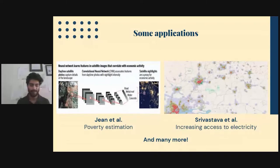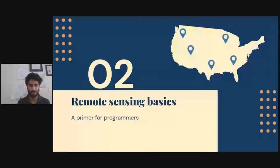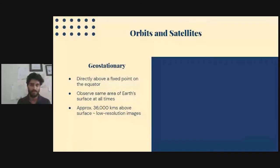To give you a small primer about what the terminologies are and what remote sensing is all about, this field has usually been shrouded in esoteric terminology and some things that computer scientists should not really care about. I'll just give you the bare fundamentals of what you need to know to get started. Number one is a demarcation between what kinds of orbits and satellites there are. A geostationary satellite is directly fixed above a single point on the equator of the earth's surface. So it observes the same area of the earth's surface at all times. The physics behind this governs that these satellites should be around 36,000 kilometers above the surface.